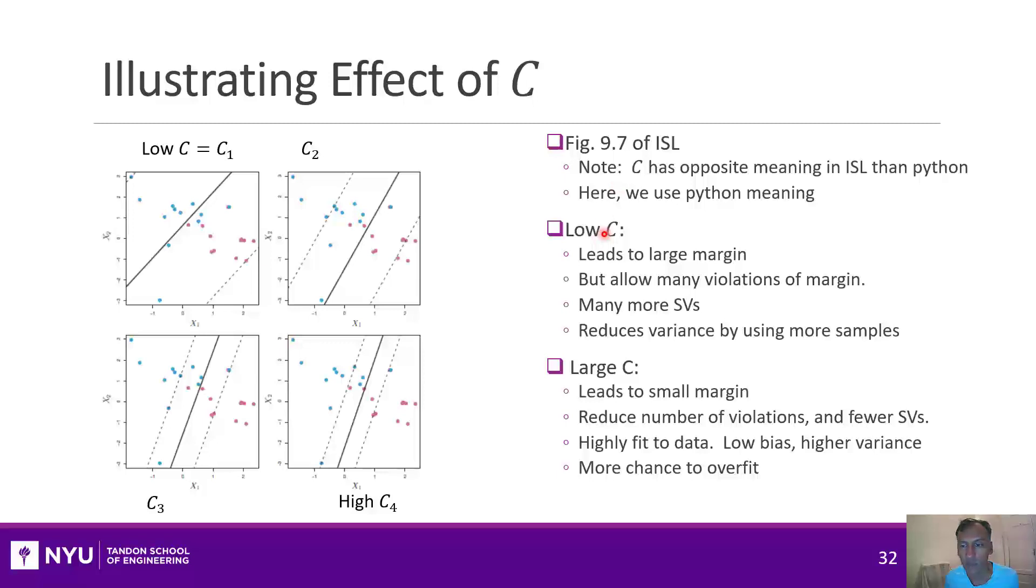If we have low C, remember that the C is penalizing the other term, the hinge loss term. So if you don't penalize that, you're penalizing the margin. So you try to have a very large margin in your solution. So it would look kind of like this. Here's the line and you have an extremely large margin shown here. You'll have many more support vectors in that case. What it does by having many more support vectors is it reduces the variance of the data, or equivalently, it increases the bias because you're using more terms in that minimization.